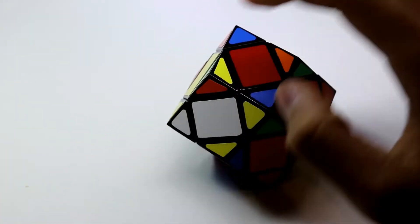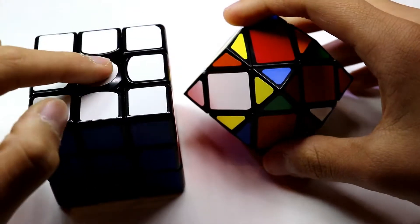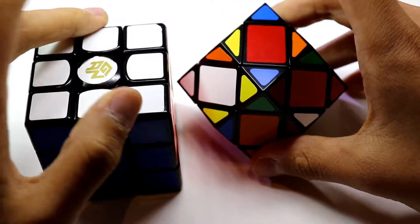So it has similar concepts to the 3x3. Compared to the 3x3, the center would be this, edge, and corners would be these four pieces.